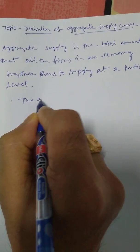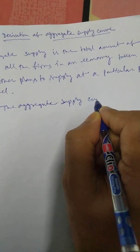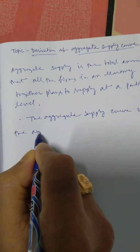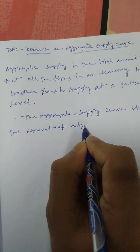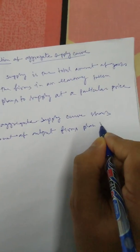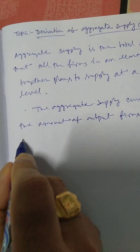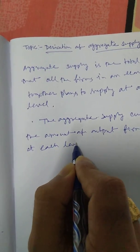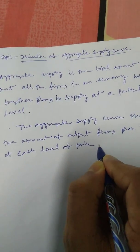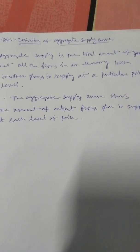Now what is the aggregate supply curve? The aggregate supply curve shows the amount of output that firms plan to supply at each level of price. That means the aggregate supply curve establishes the relationship between price and output — at different prices, what will be the amount of supply in a macroeconomic sense.